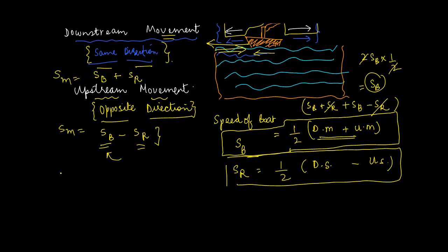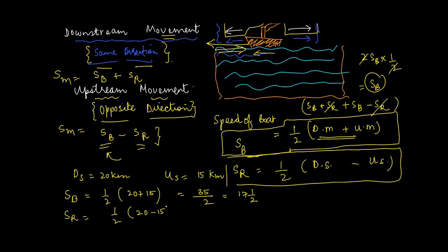So let's say someone tells you that the downstream speed is equal to 20 km, upstream speed is equal to 15 km. Find speed of the boat and speed of the river. Speed of the boat will be half downstream plus upstream, 35 by 2 or 17 and a half. Speed of the river is equal to what? Half 20 minus 15, 5 by 2 or 2 and a half. That's the way you get to these answers.